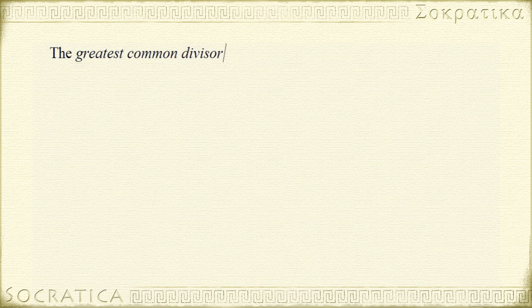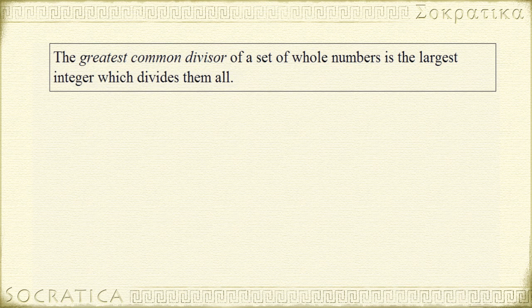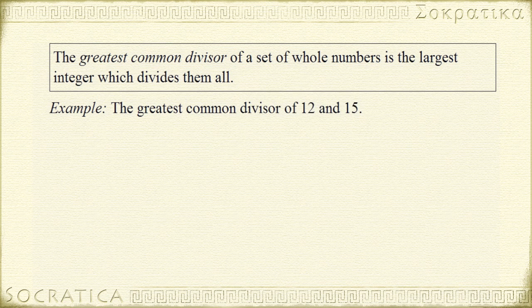The greatest common divisor of a set of whole numbers is the largest integer which divides them all. Let's see a few examples. To start, let's find the greatest common divisor of 12 and 15. This is how you write it. You abbreviate greatest common divisor as GCD. It's sometimes called the greatest common factor, but nowadays greatest common divisor is most common.